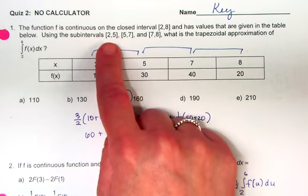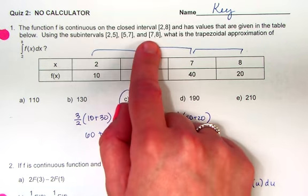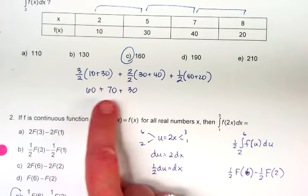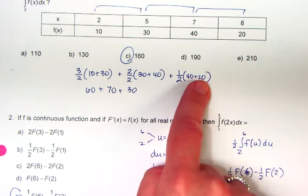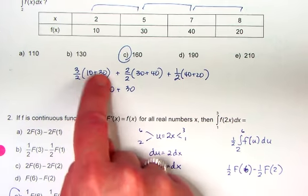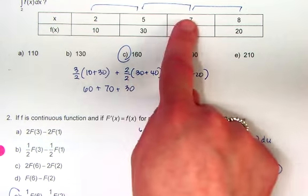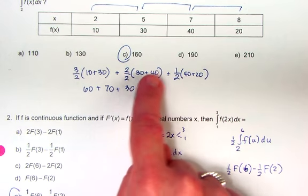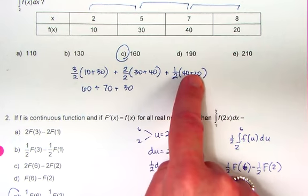You have different distances between each of these points. When you do a trapezoidal sum, that's why you have to do three different calculations. This is the height over 2 times the sum of the first two bases, the height over 2 times the sum of the second two, height by 2, sum of the third two bases.